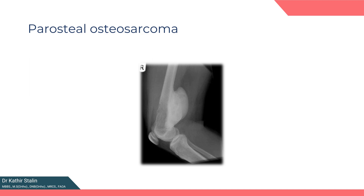Now let's discuss parosteal osteosarcoma. It is a low-grade surface variant that often presents as a painless mass at the metaphysis of the long bone. This tumor has a peculiar affinity for the posterior aspect of the distal femur, though other common sites include the proximal tibia and proximal humerus. Radiographically, we observe a heavily ossified, lobulated mass originating from the posterior aspect of the distal femur. Resection with a wide margin is the preferred treatment, with an excellent prognosis. Since it is low-grade, no chemotherapy is needed.